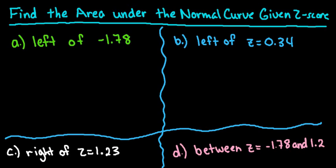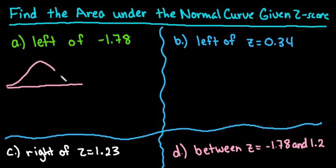For this video, I want to show you how to use the normal table to find the area under the normal curve given a z-score. A z-score tells you how many standard deviations above or below the mean a value is. A z-score is in the standard normal distribution, which is centered at 0 with a standard deviation of 1, so 0 is in the middle and we count by 1s in each direction.